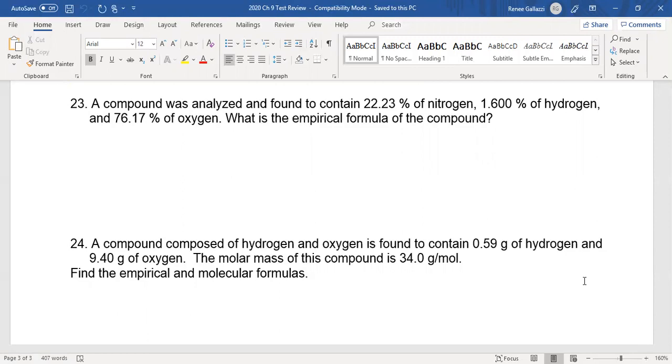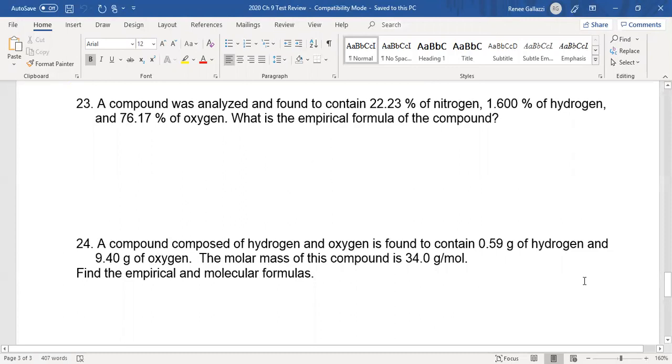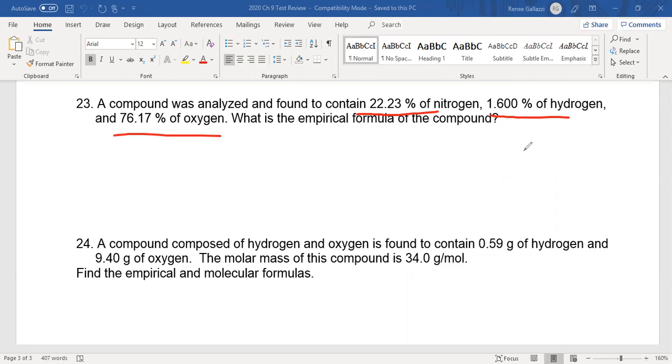If you're given something in percentage, just change it to grams out of 100 grams and we can still do the same process. So you're going to have the nitrogen, 22.23 nitrogen, and 1.600 hydrogen and the 76.17% of oxygen. Once you convert those to moles, you should have around 1.587 moles for nitrogen. And you also would get around 1.587 moles for hydrogen. And then the oxygen, we got 4.61 moles.